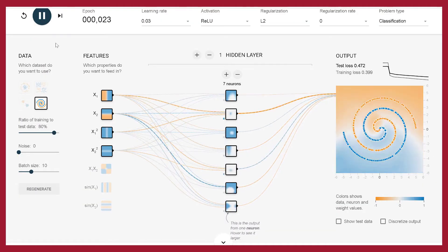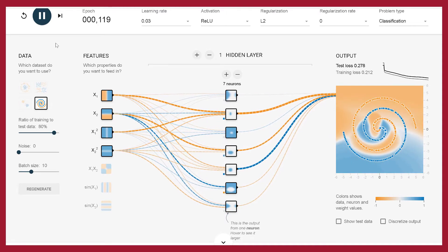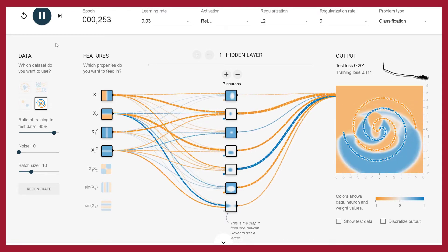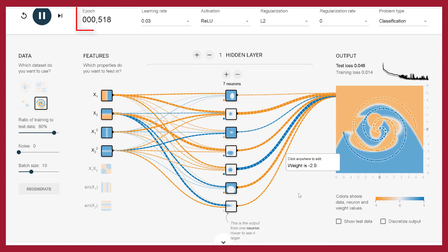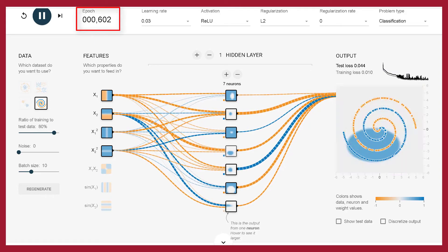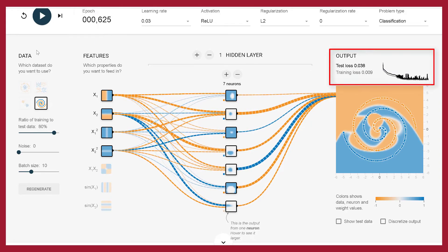Next, I decided to reduce the number of input features to four using X1, X2, and sine features. In this case, the learning weights were much higher and learning looked unstable. After about 600 epochs, the test loss was 0.038 and the training loss was 0.009.